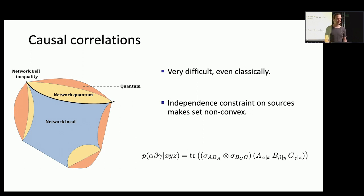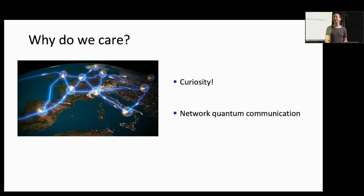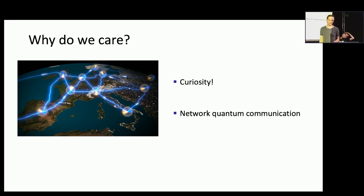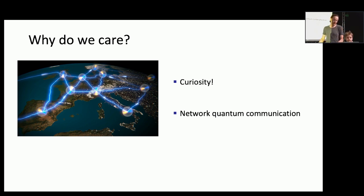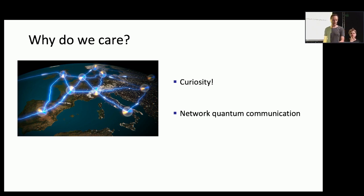Why do we care about this? Curiosity: the relation between correlations and causation appeals to people thinking fundamentally about quantum theory. There are also applications in quantum communication — not just Alice and Bob exchanging photons, but more complicated setups like the big Dutch project trying to build a quantum internet with many parties and non-trivial network structures. Understanding what is possible classically and quantum in a network is important, and neither question is well understood, so there is a lot of fundamental research to be done.